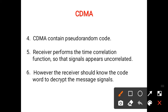CDMA contains a pseudo-random code, and the receiver performs a time correlation function so that the signal appears uncorrelated. At the receiver, it cannot be determined which part is the code and which is the message signal. However, the receiver must know the code word to decrypt the message signal. The exact reverse process of adding the PN sequence applied at the transmitter is applied at the receiver, removing the code so that only the message signal is received.